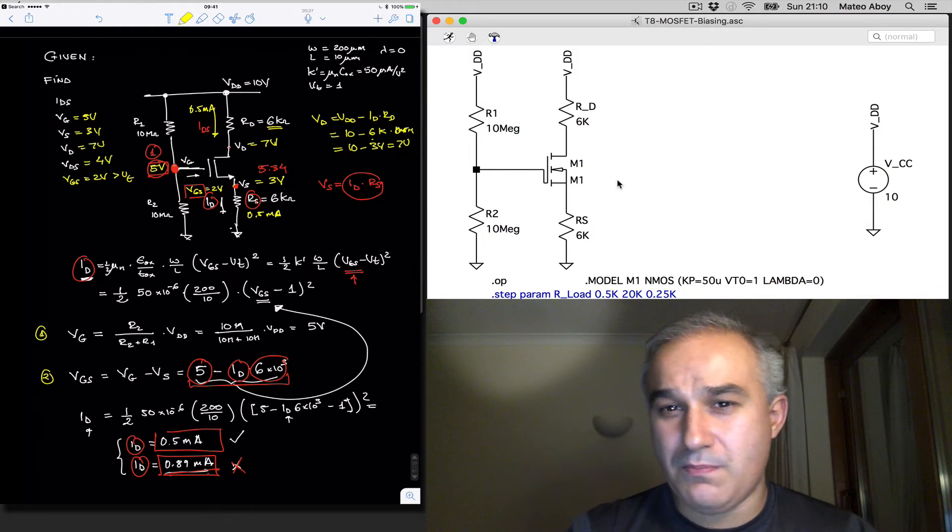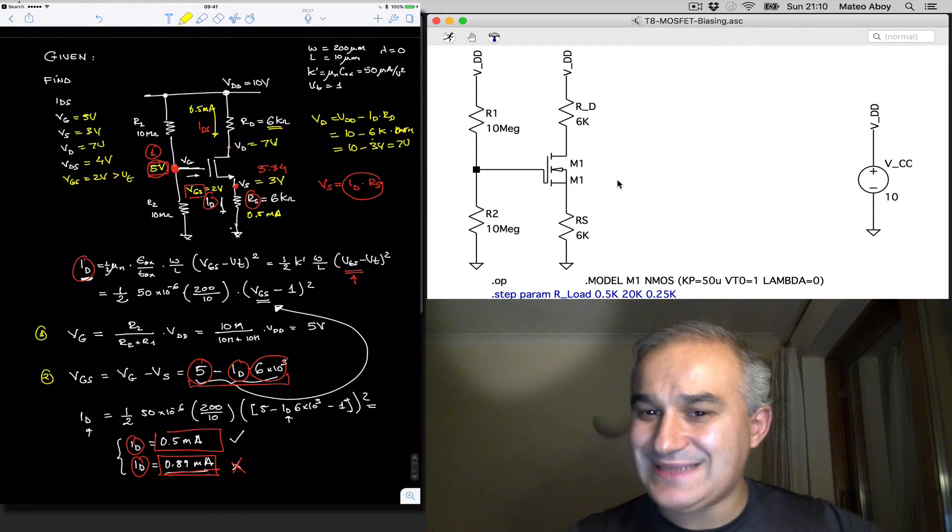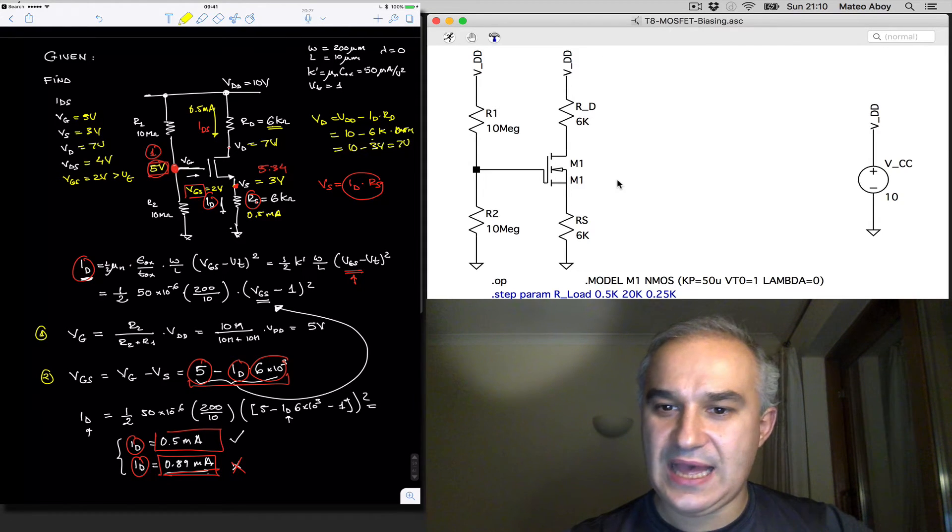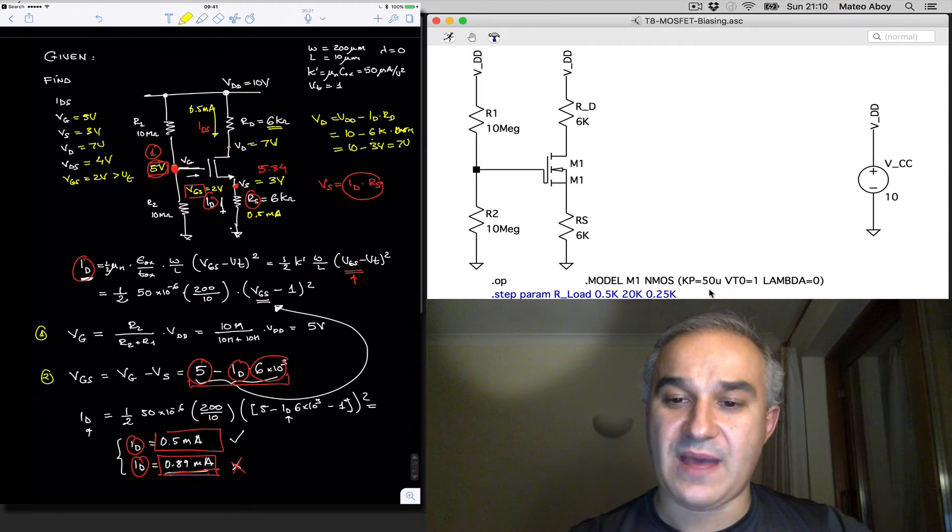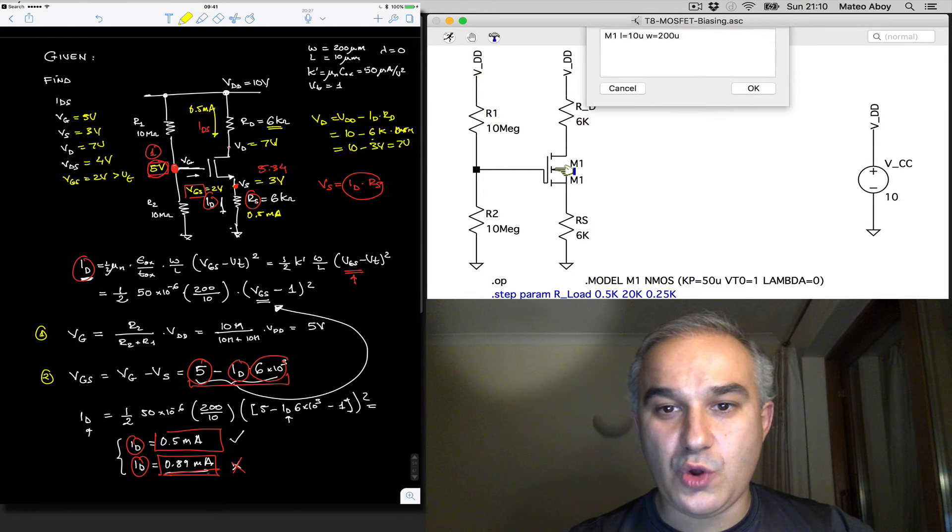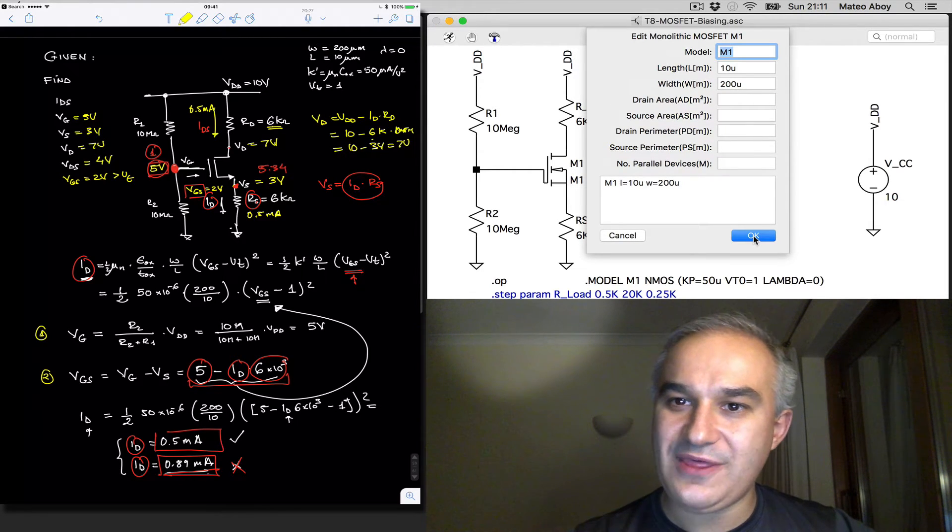And we need to model it. So, using the Spice directive model, give it a name, M1 in this case. I selected the Kp value of 50 micro, the threshold voltage of 1 volt, lambda equal to 0, and then you also need to select the width and the length.